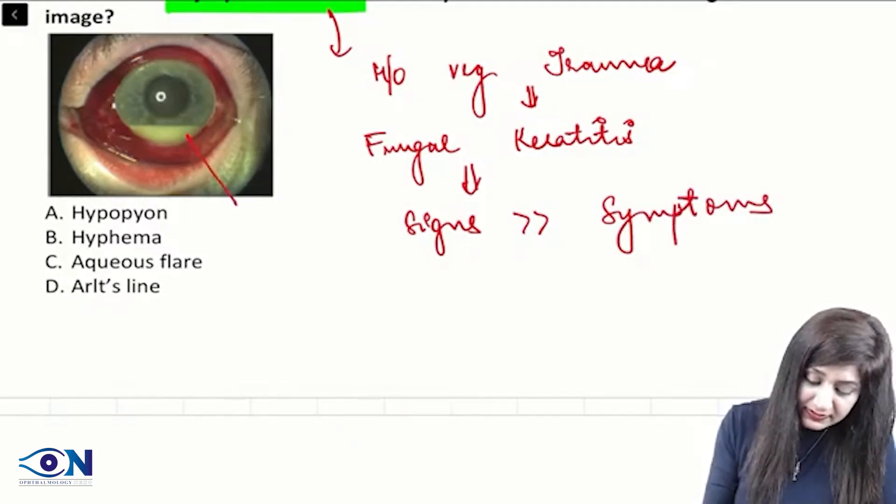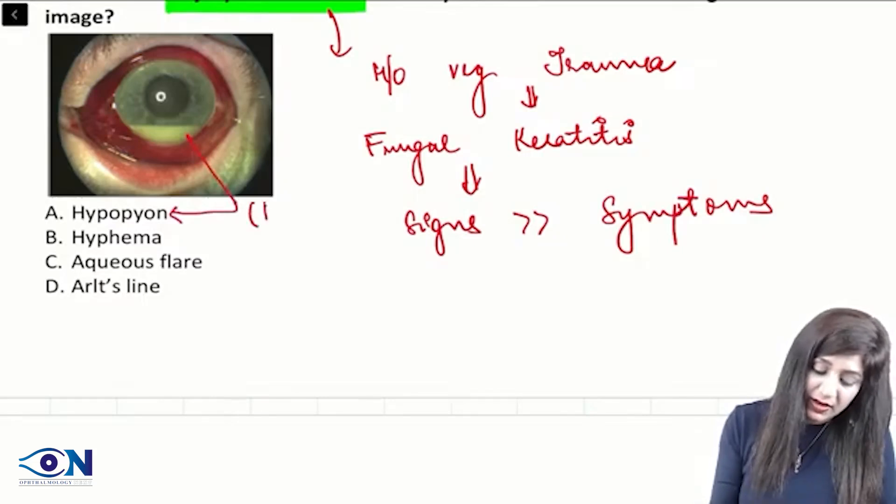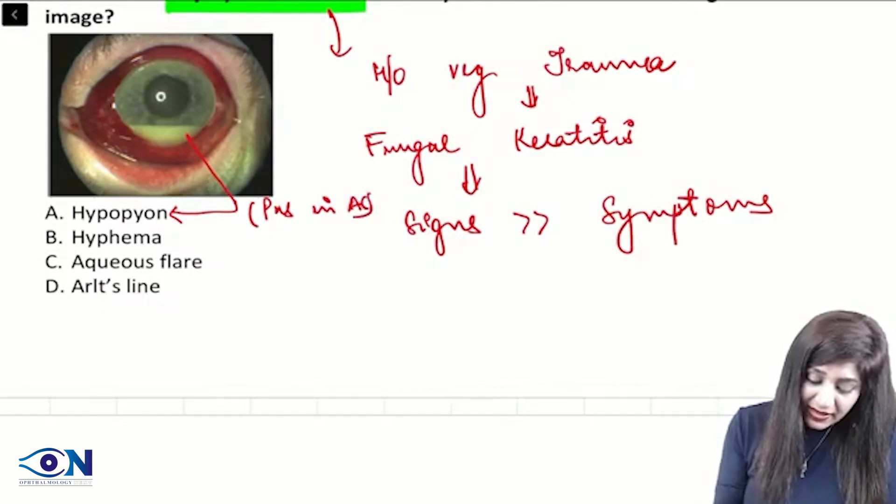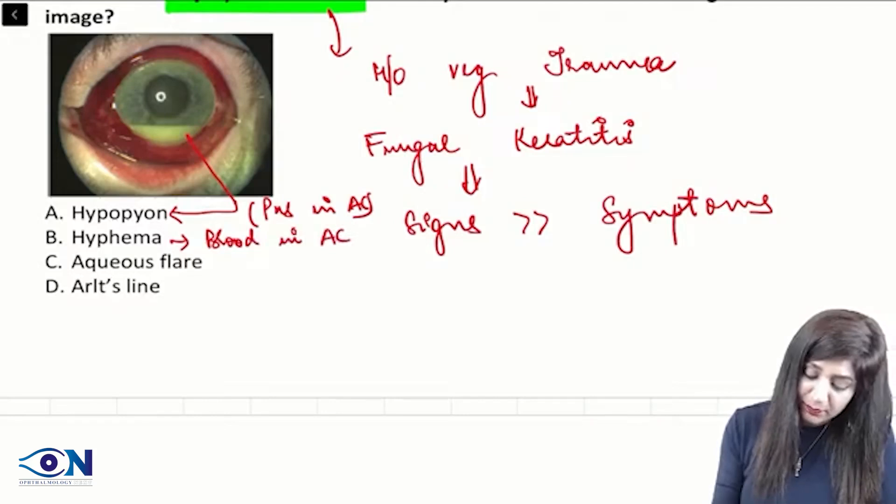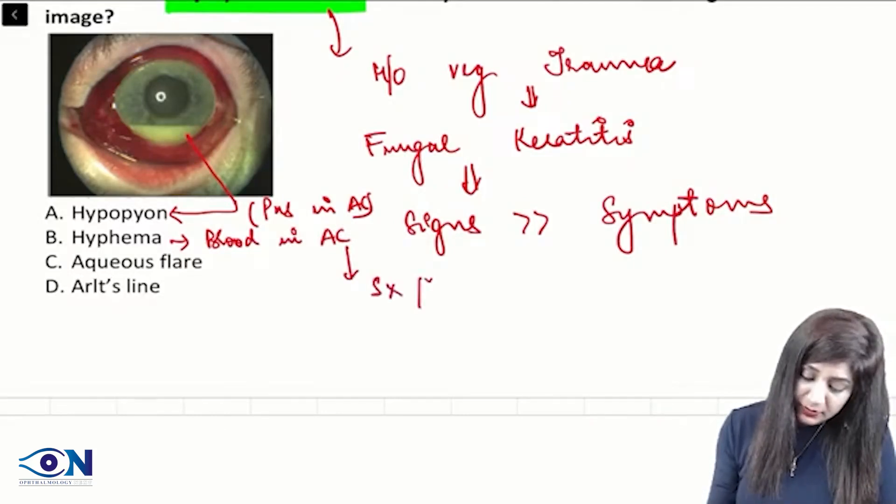This sign is hypopyon where we have pus in the anterior chamber, while hyphema is blood in the anterior chamber and this hyphema can occur due to surgery or it can be due to trauma.